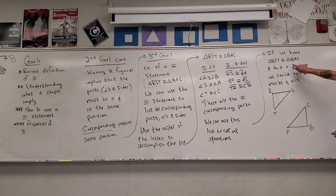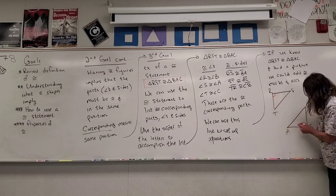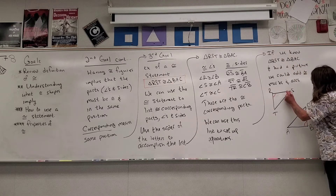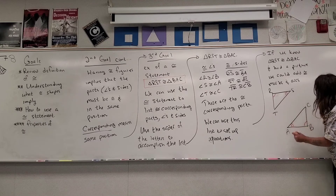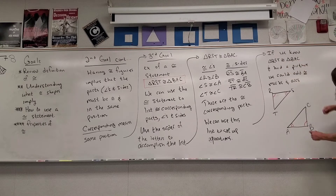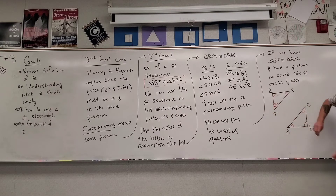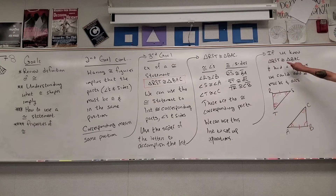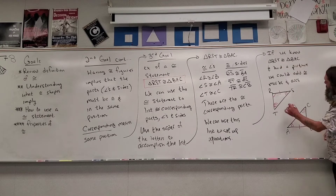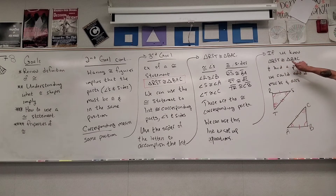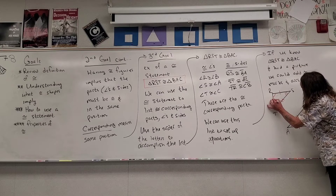Angle R is congruent to angle B, so they each get one congruent arc. Angle S is congruent to angle A, so they get two congruent arcs. Angle T is congruent to angle C, so they get three congruent arcs. Side RS is congruent to side BA, so they get one congruent tick mark. Side ST is congruent to side AC, so they get two congruent tick marks.